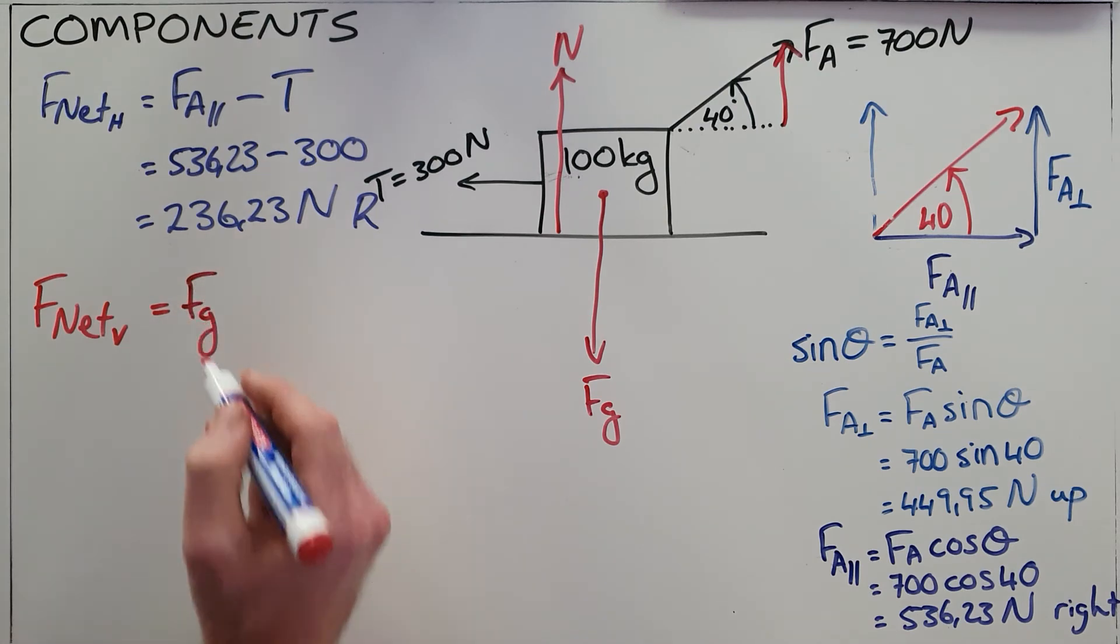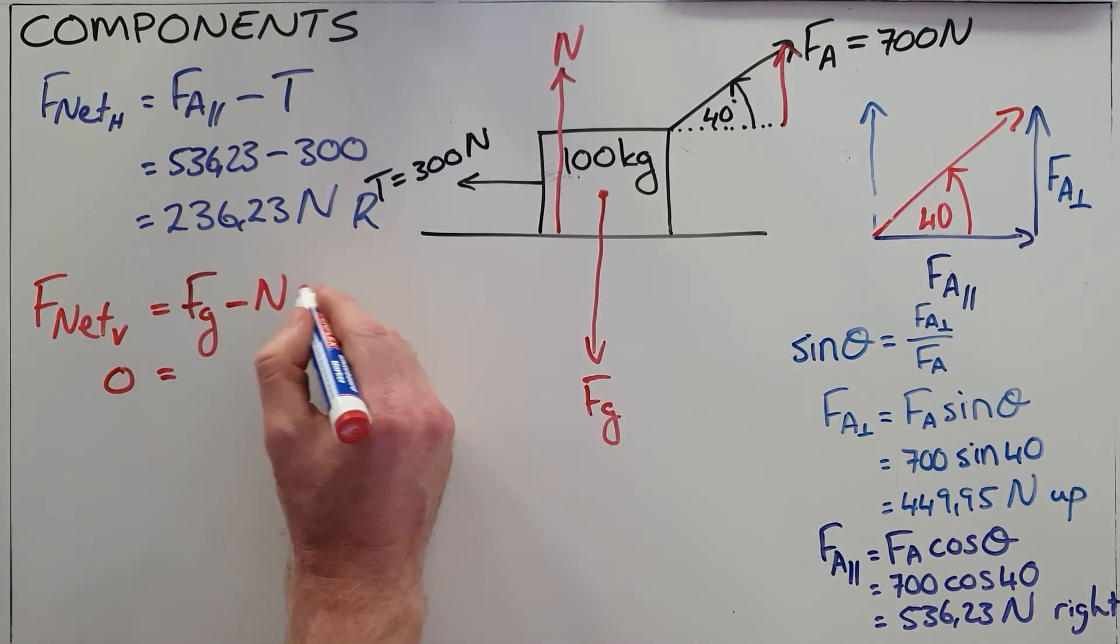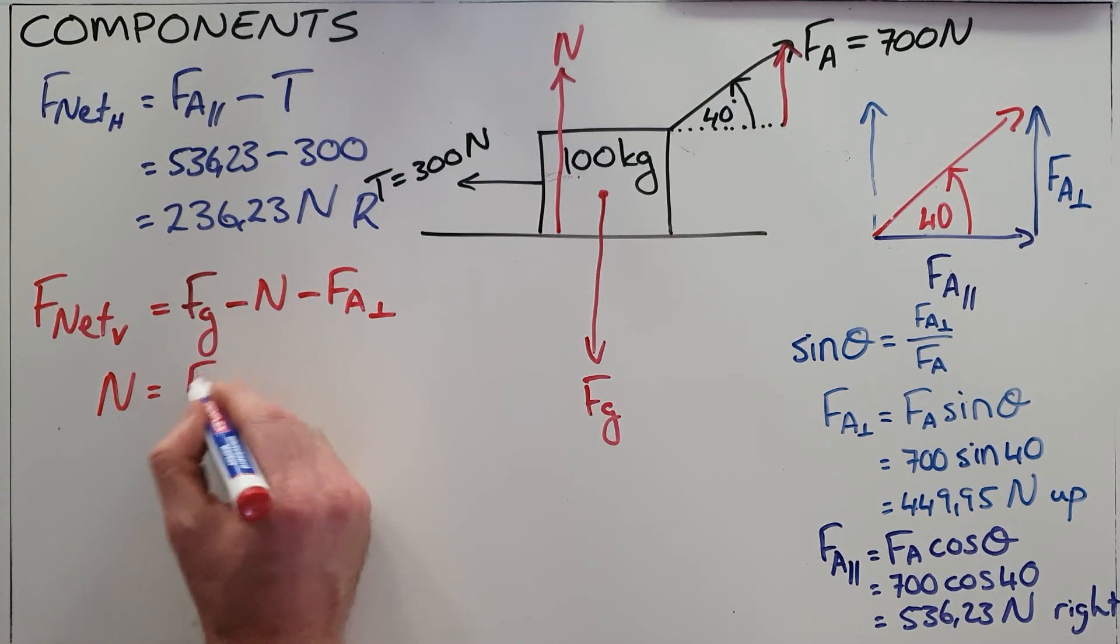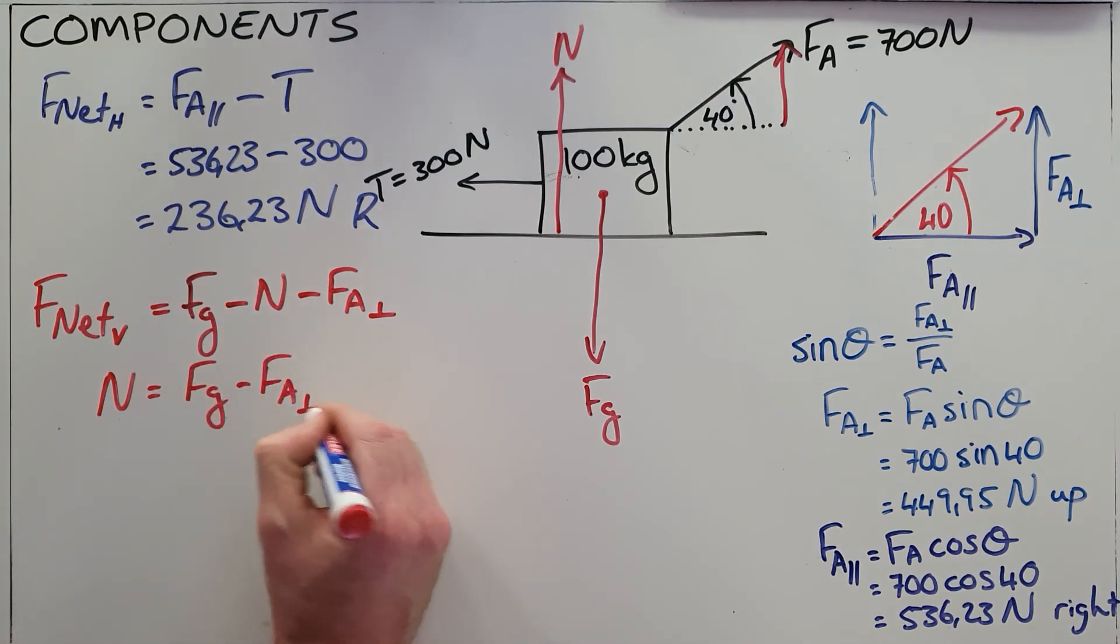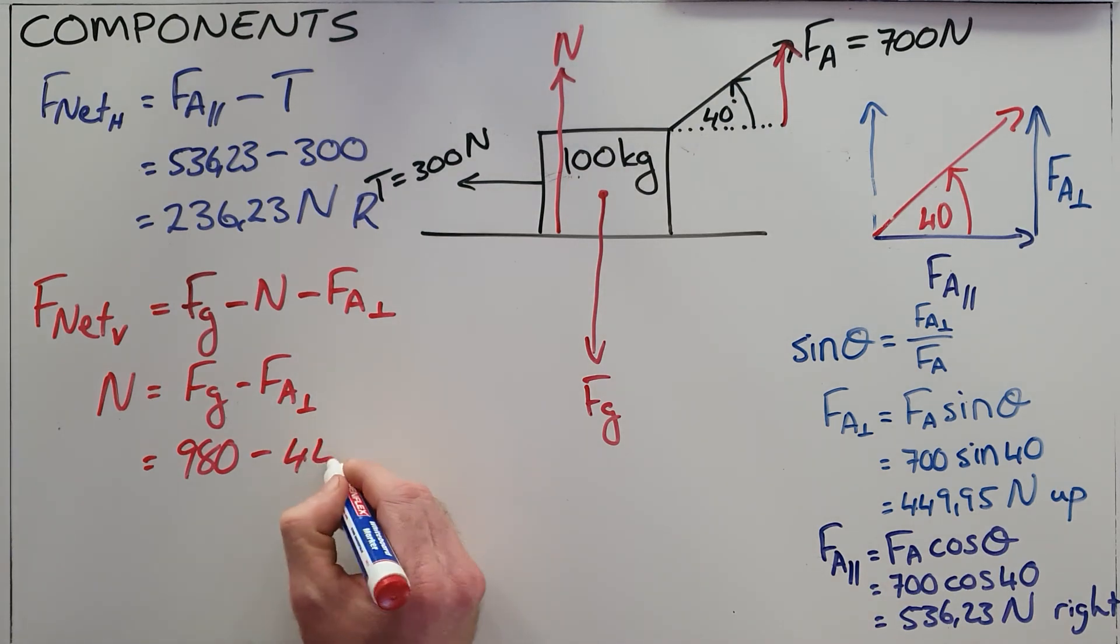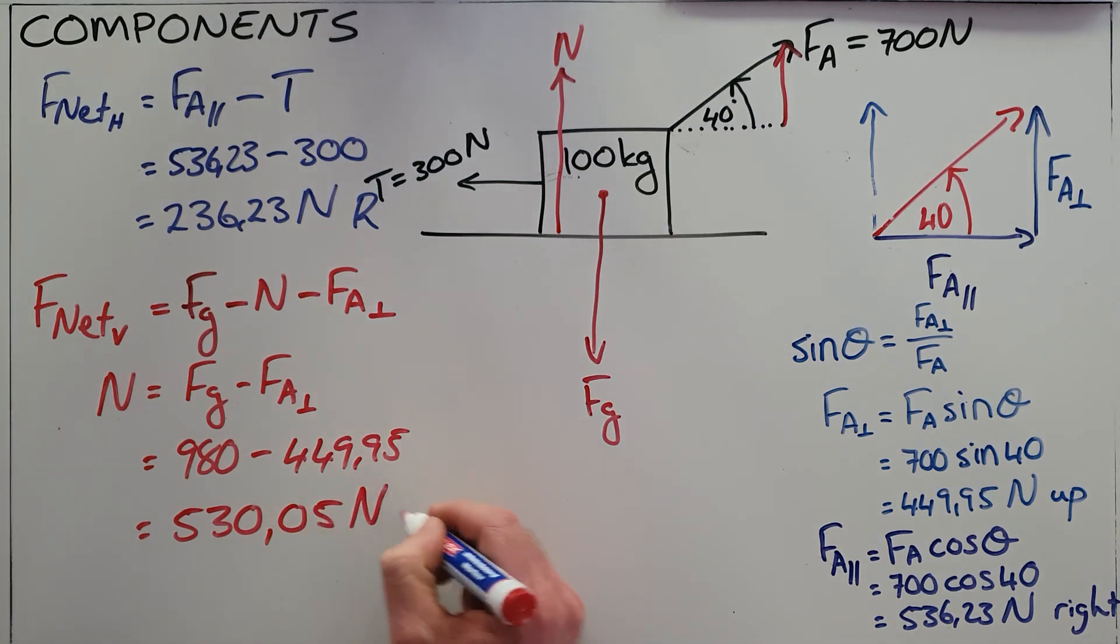So our net vertical force, F_G minus the normal force minus our F_A perpendicular. We can rewrite that to find that our normal force is equal to our force of gravity minus F_A perpendicular. In this case the force of gravity, mass times gravity, 980, minus the perpendicular applied force, 449.95, which then gives us a net vertical force of 530.05 newtons upwards.